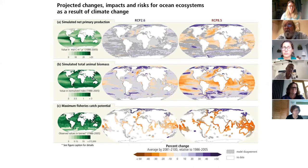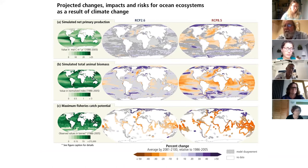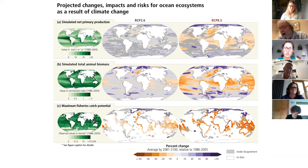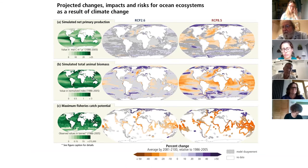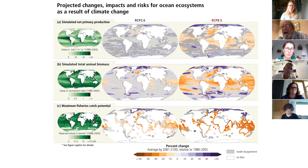For ocean ecosystems, looking at maximum fisheries production, animal biomass, and net primary productivity: at high emissions (RCP 8.5), but also at low emissions (RCP 2.6), there are major reductions in fish catches all over the world, except at very high latitudes in the Northern Hemisphere. There are also major changes in animal biomass and primary productivity.